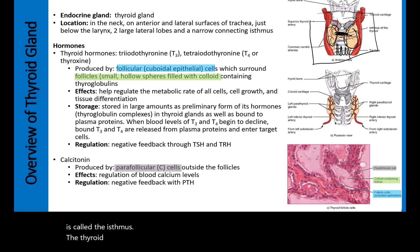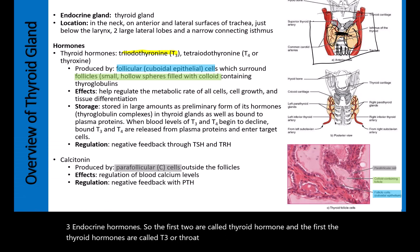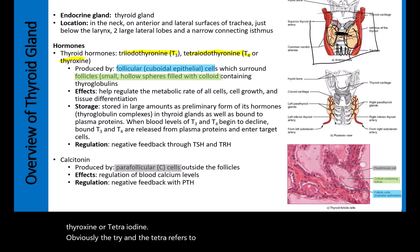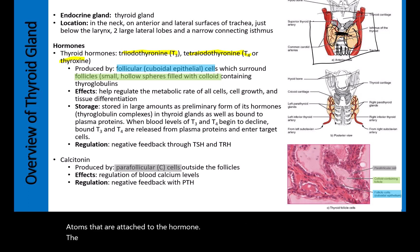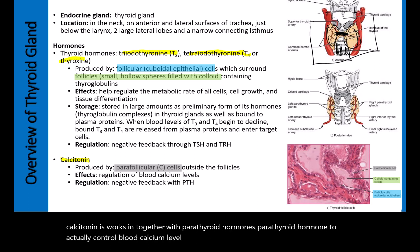The thyroid gland produces three endocrine hormones. The first two are thyroid hormones: T3, or triiodothyronine, and T4, also known as thyroxine or tetraiodothyronine — the tri and tetra refer to the number of iodine atoms attached. The third endocrine hormone is calcitonin, which works together with parathyroid hormone to control blood calcium levels.